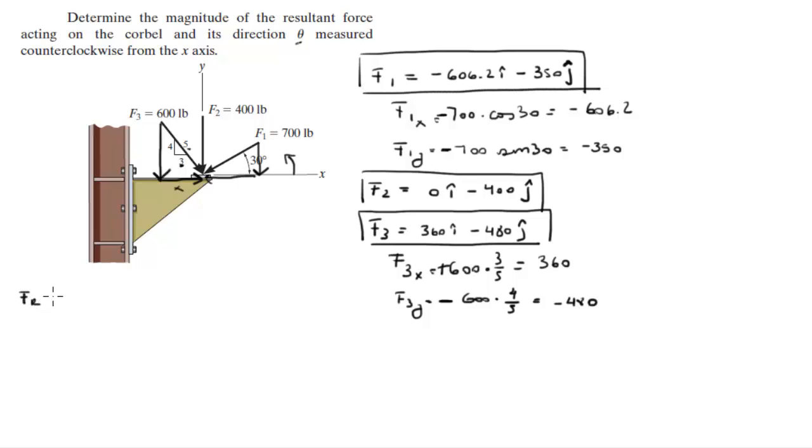The resultant force is given by adding the three vectors, which means that you add the x with the x and the y's with the y's. And once you do, you're going to get that the resultant force is equal to negative 246.2 minus 1230.